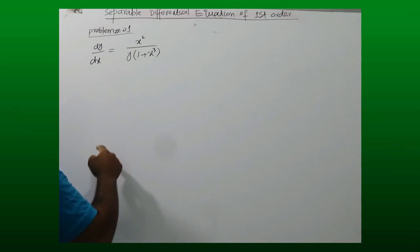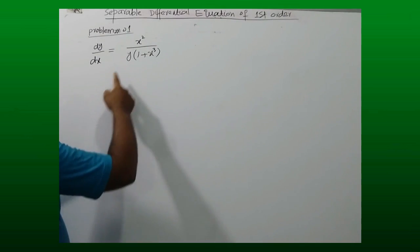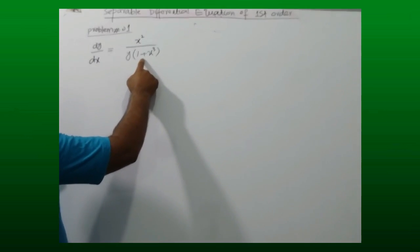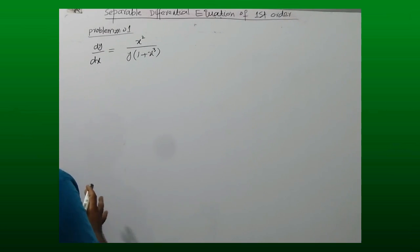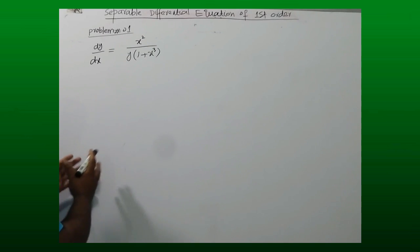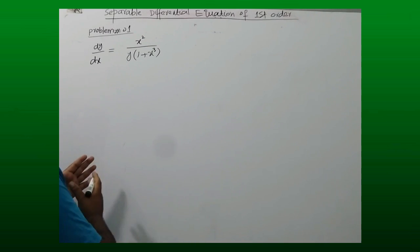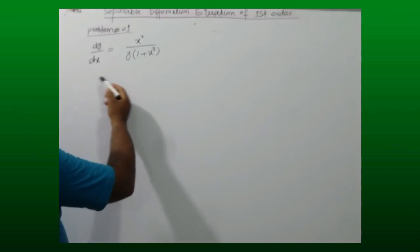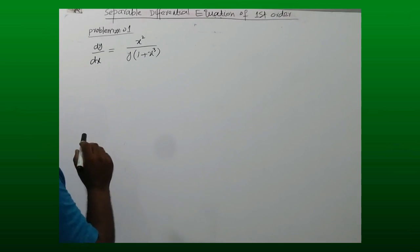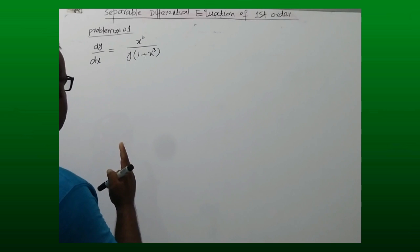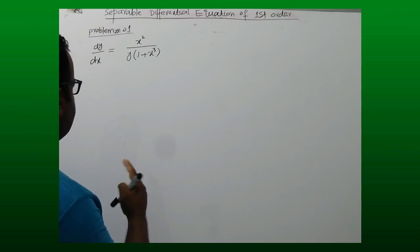is equal to x squared divided by y times 1 plus x cubed. We can see that we can separate the variables. There are two variables, x and y, in this differential equation — one is x and the second is y.